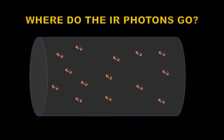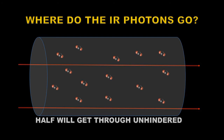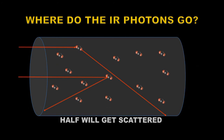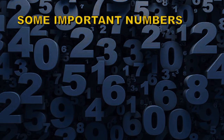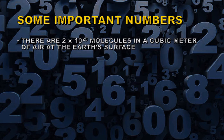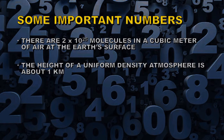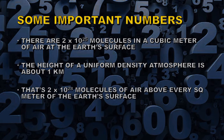So where do the IR photons go? Going back to experiment two: we shine IR photons in at one end. Some proportion get through unhindered, not hitting any CO2 molecules. However, some will hit the CO2 molecules and be scattered in a random direction — forwards, backwards, or sideways in three dimensions. Now, some of you will realize we haven't yet addressed whether there are enough CO2 molecules in the atmosphere to do much of anything. Let's look at some numbers: there are 2×10²⁵ molecules in a cubic meter of air at the earth's surface. The height of a uniform-density atmosphere is about one kilometer, meaning there are 2×10²⁸ molecules of air above every square meter of the earth's surface.